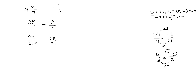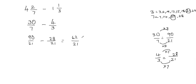Now my denominators are equal, so I can go ahead and subtract these fractions. When subtracting fractions, first check that your denominators are equal, then only subtract the numerators. So 90 minus 28 gives me 62, and we don't subtract the denominator, so the denominator stays 21. So I got 62 over 21.